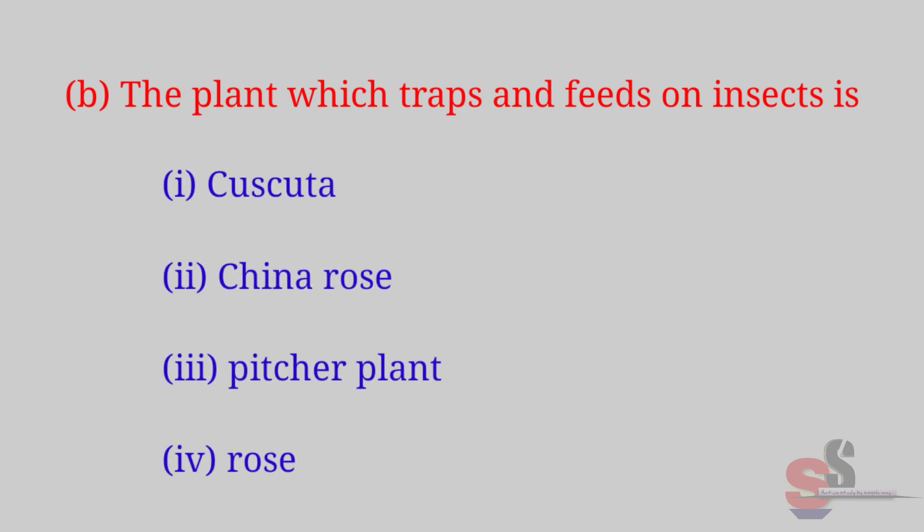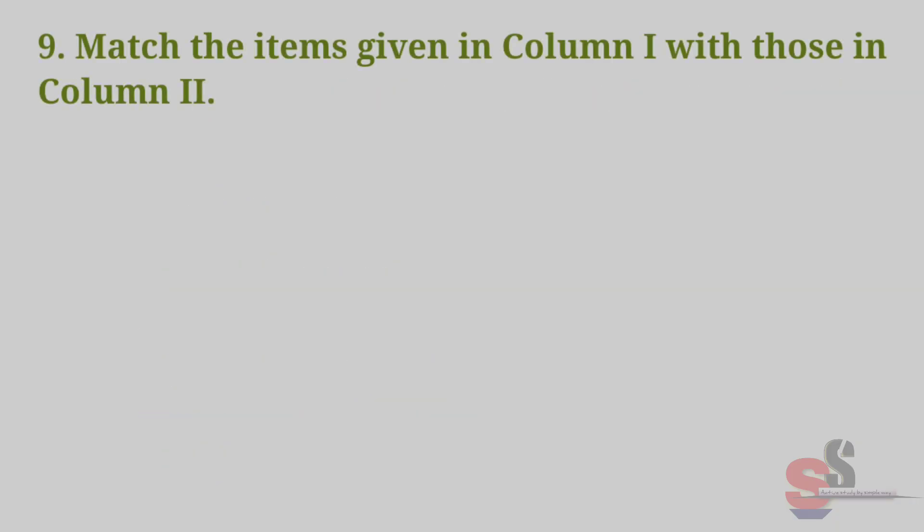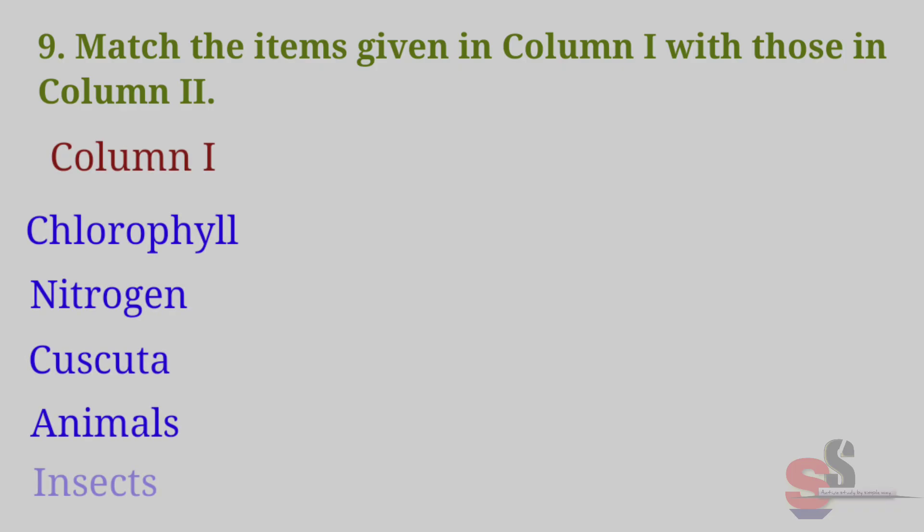Question 9: Match the items given in column 1 with those in column 2. Column 1: chlorophyll, nitrogen, Cuscuta, animals, insects. Column 2: Rhizobium, heterotrophs, pitcher plant, leaf, parasites.